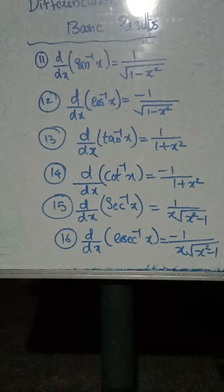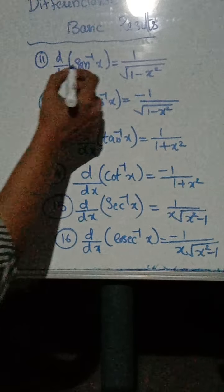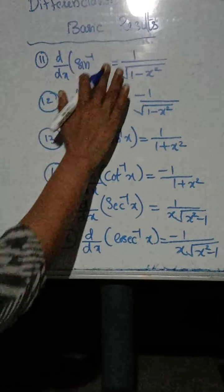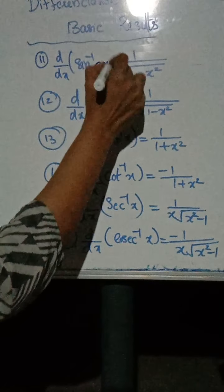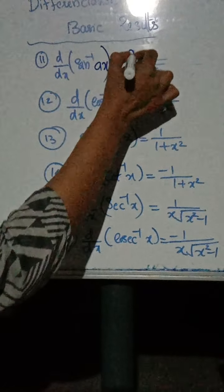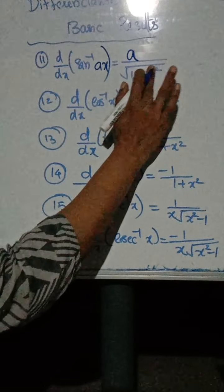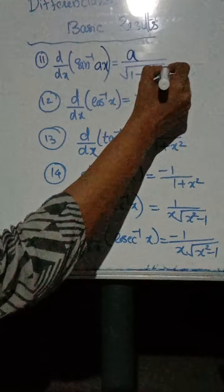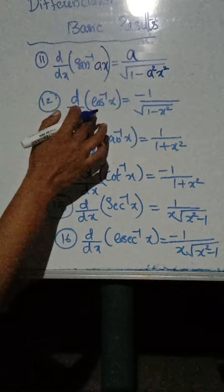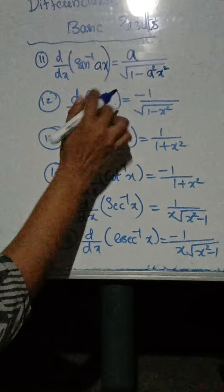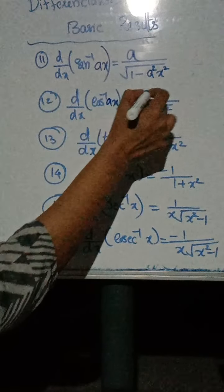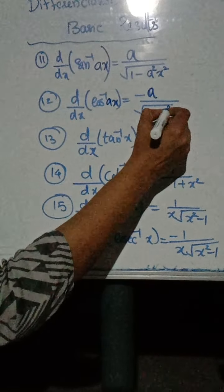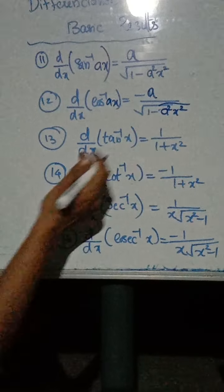Now, what is the derivative of sin inverse ax? The derivative of sin inverse ax equals a by root of 1 minus a square x square. Similarly, the derivative of cos inverse ax is minus a by root of 1 minus a square x square.